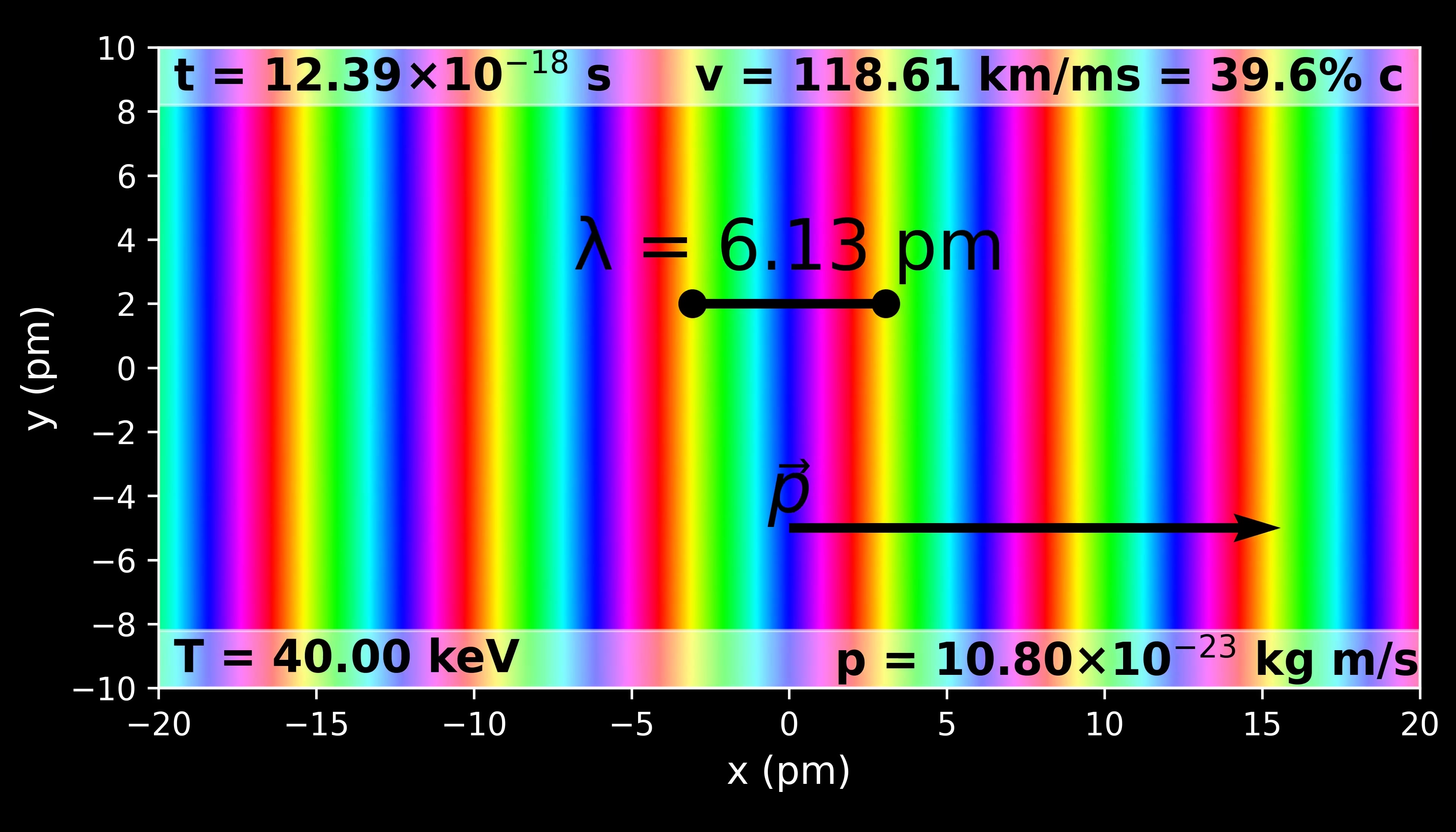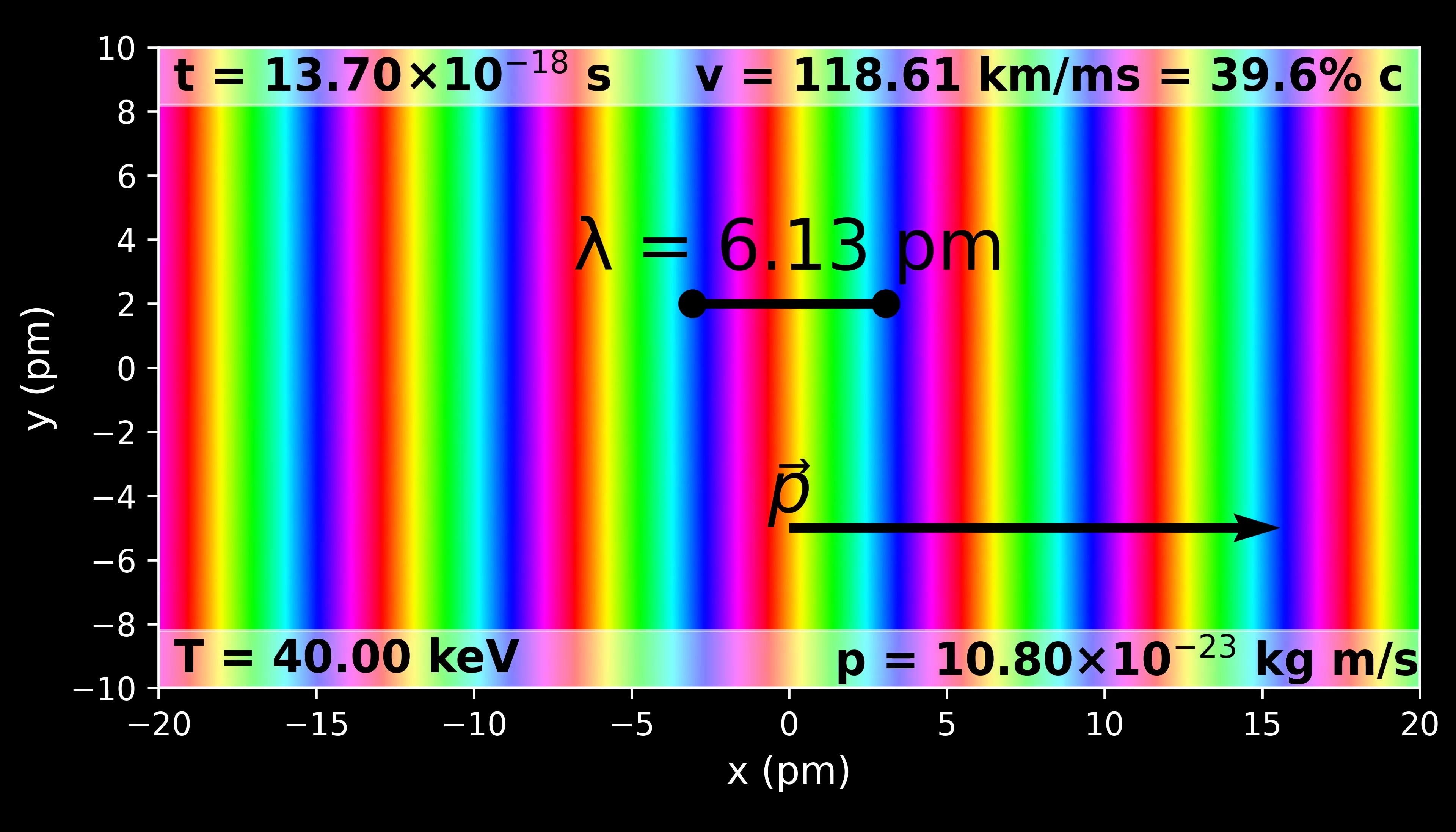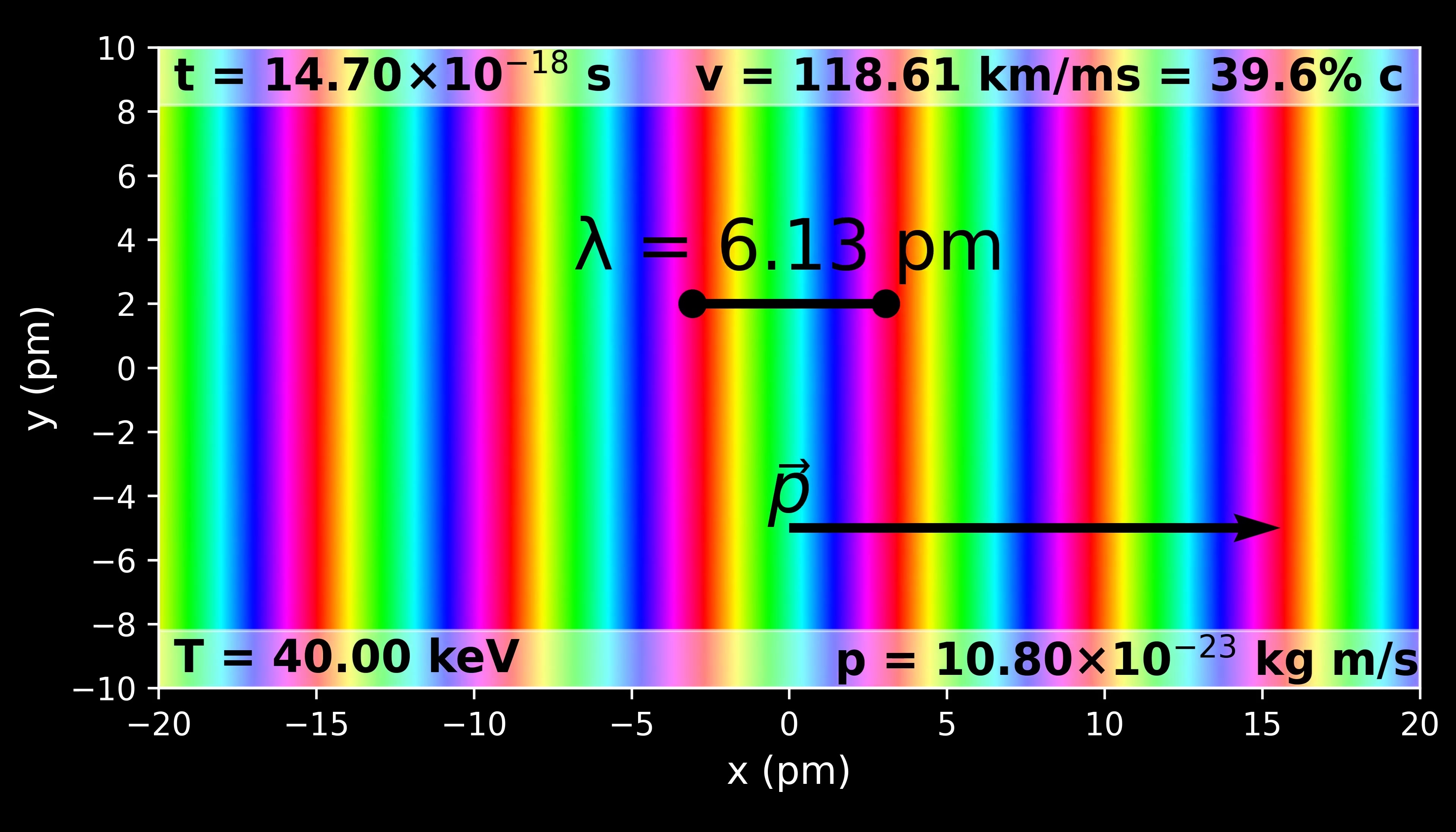Now what happens if we crank up our acceleration voltage and make some blazing fast 40 keV electrons? Well, now we're going basically 40% the speed of light. By the way, that's easy to remember—40 keV, 40% the speed of light. It only applies to electrons, but if you do a lot of electron diffraction or electron microscopy, that's just something to keep in mind.